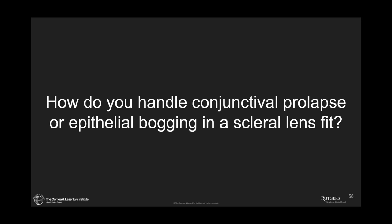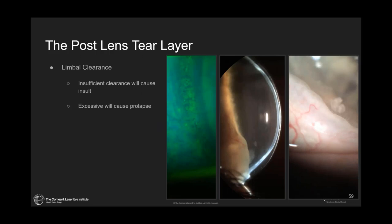How do I manage midday fogging and reservoir debris in a scleral lens? You're going to improve your lens fit. How do you handle conjunctival prolapse and fogging in a scleral lens? Again, you're going to improve your lens fit. Let's talk about limbal clearance evaluation. The best ways to evaluate limbal clearance are: first, with an optic section looking at what's going on at the limbus; the other is to take the lens off and put a little stain — this will show you areas of micro-cysts and touch.